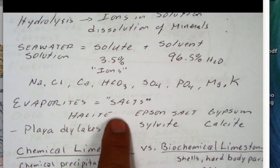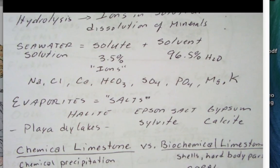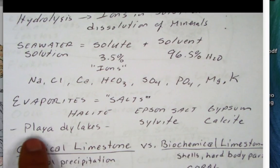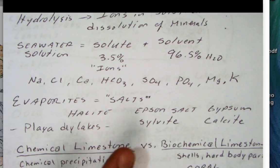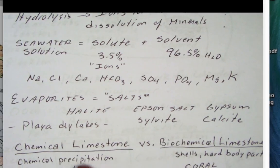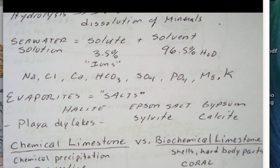So evaporites are examples of sedimentary rocks formed by evaporating water. Death Valley, the dry lake beds, salt flats, those are forming there as well. All right, well, let's stop here and then we'll start with chemical and biochemical limestones.